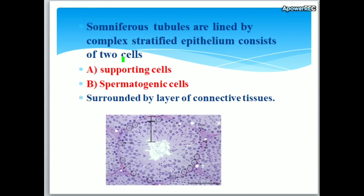Seminiferous tubules are lined by complex stratified epithelium consisting of two cell types: supporting cells and spermatogenic cells. They are surrounded by a layer of connective tissue.